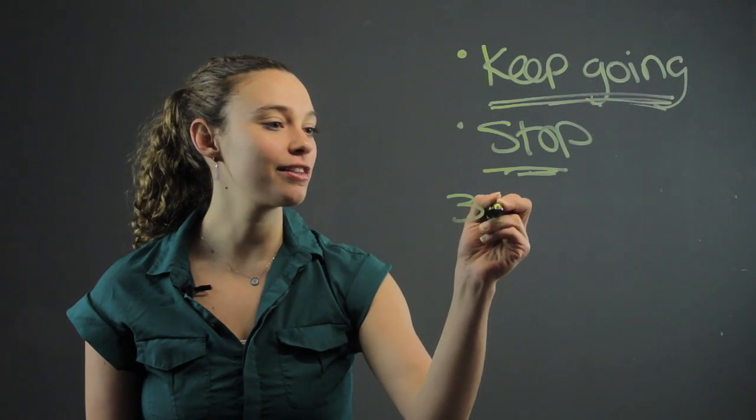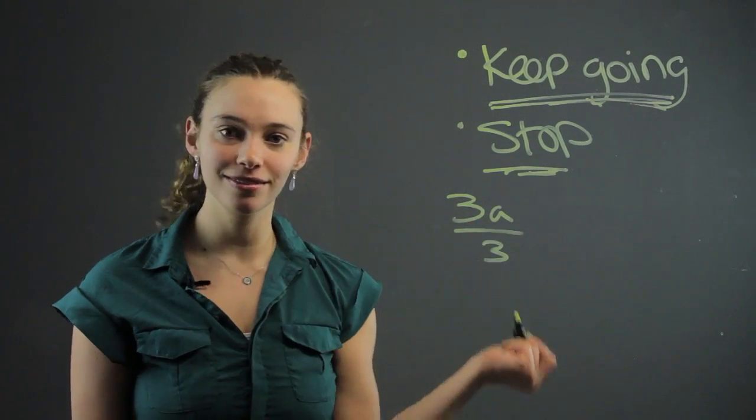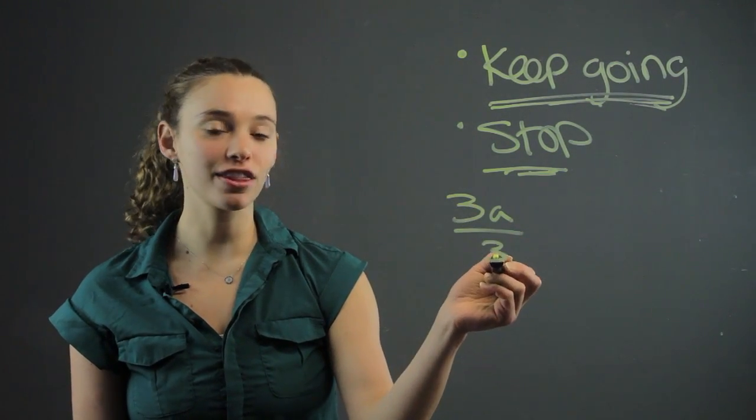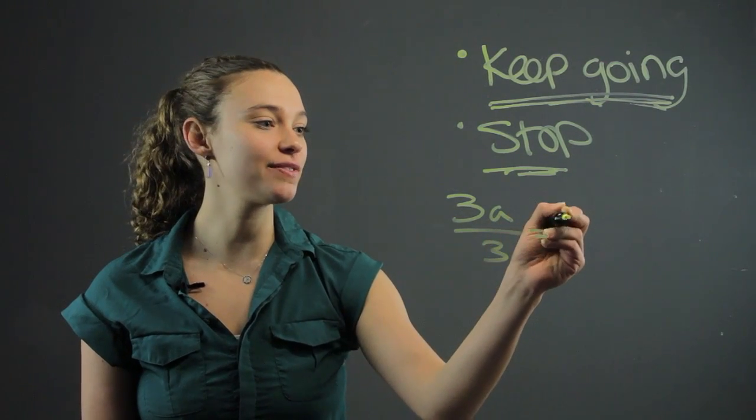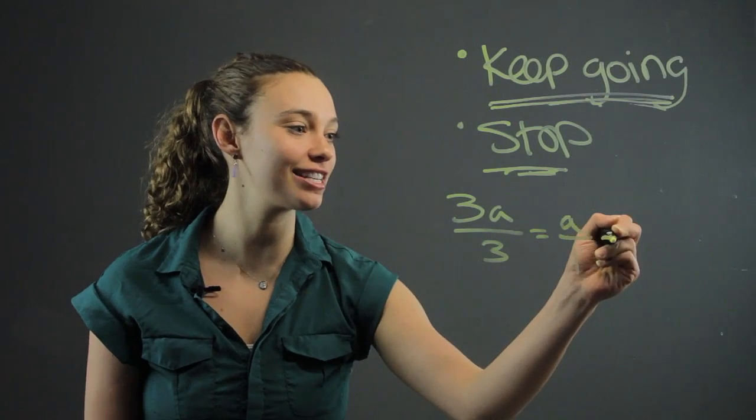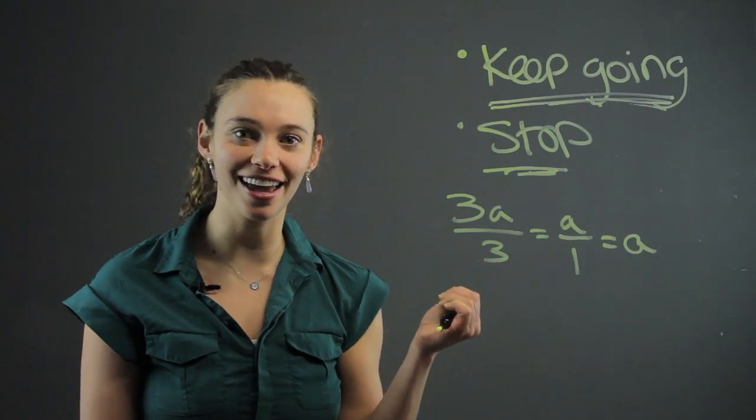If you have something like 3a over 3, you can simplify that because 3 over 3 is 1. So this is really just a over 1, and please don't ever leave it like that. Please keep simplifying, so it's just a.